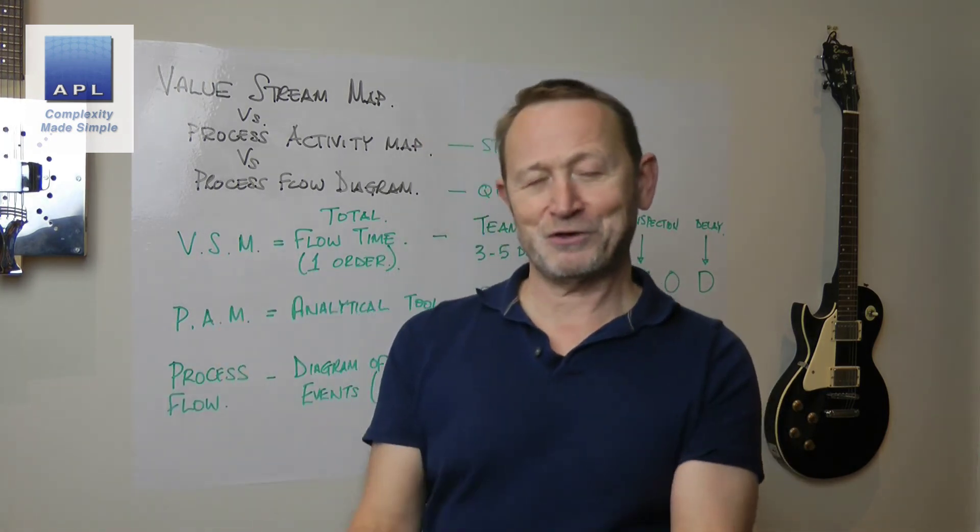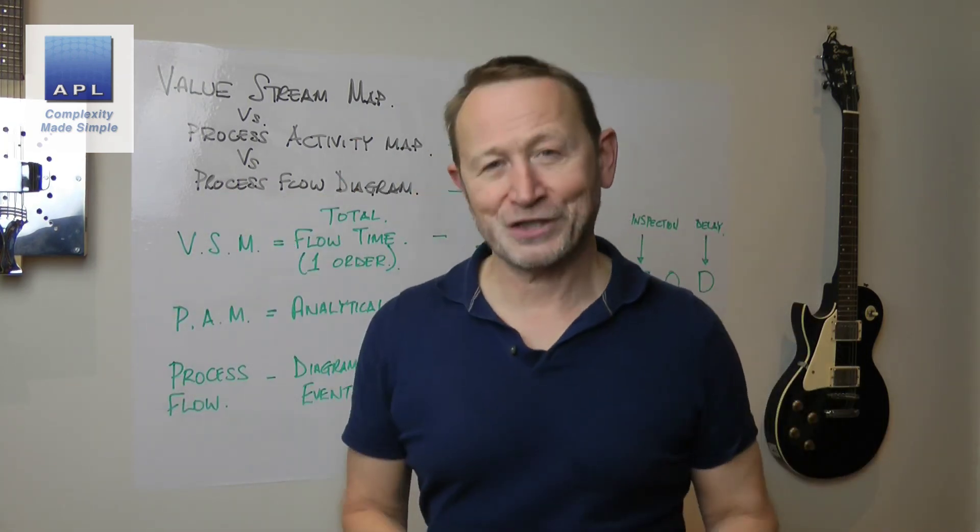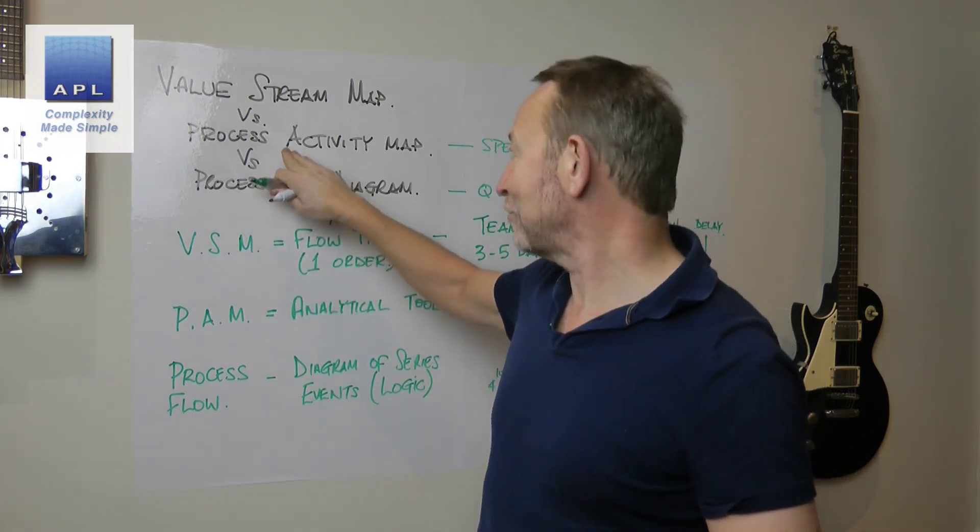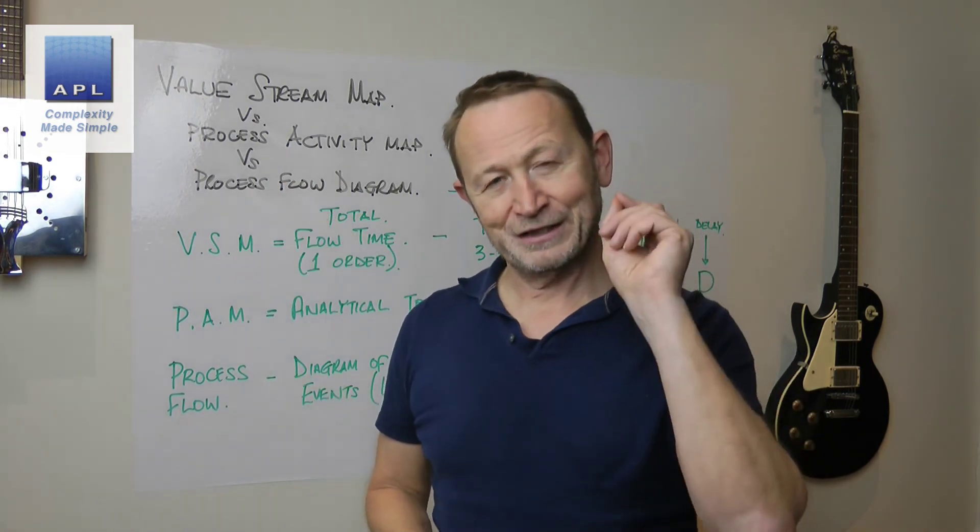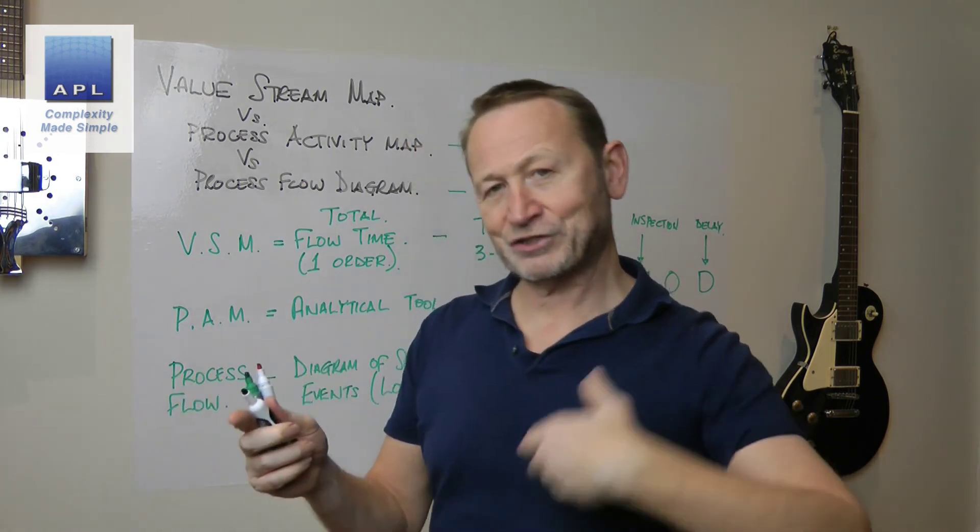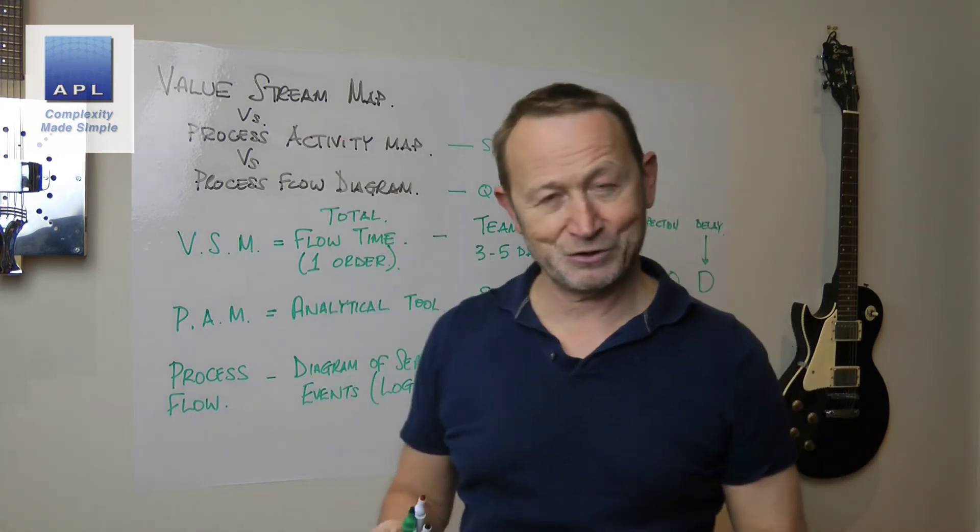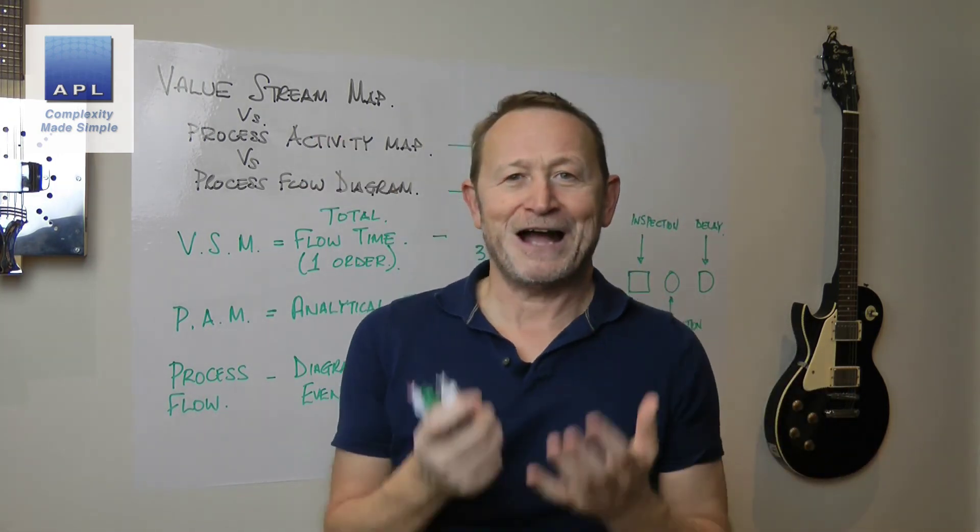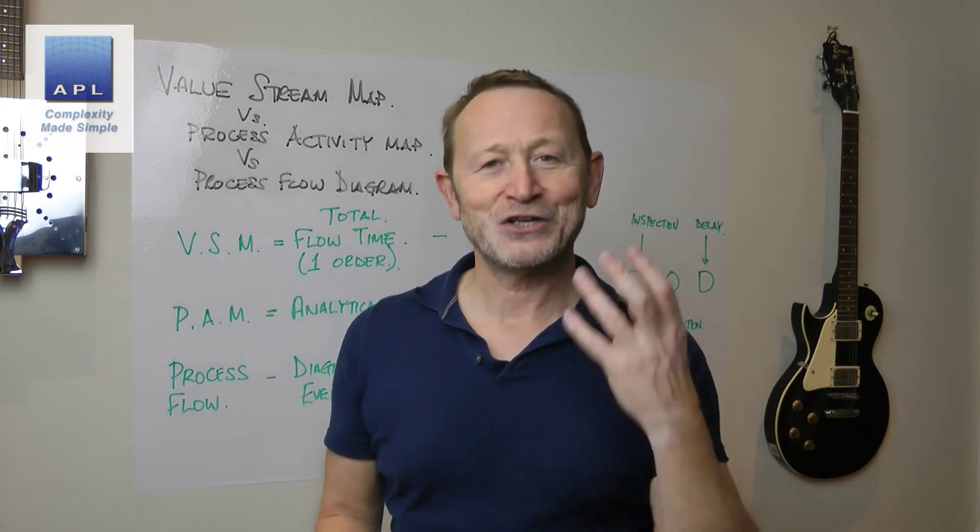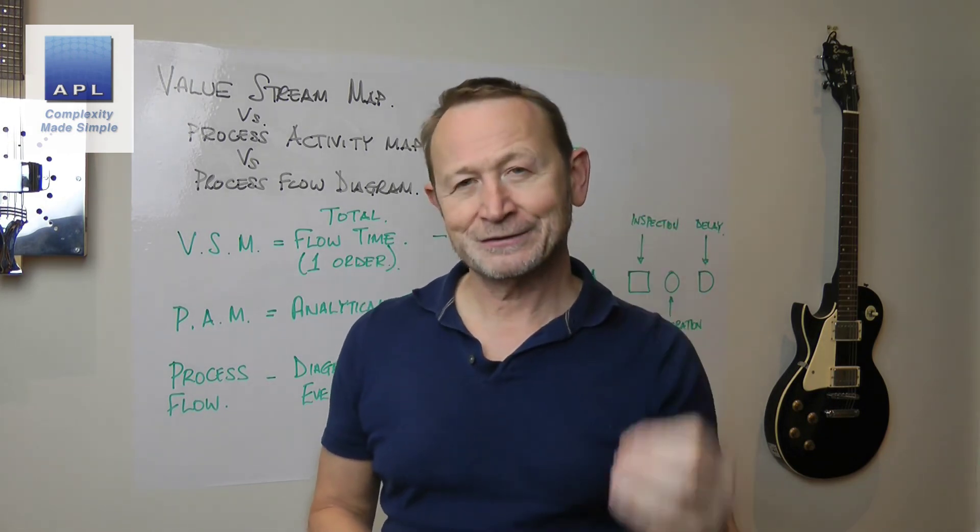For the person that asked me that question, hopefully that's answered your point: what is the difference between a value stream map and a process map—I think what he meant was a flow diagram—but I've added in process activity map. Use these tools, they are fantastic diagnostic techniques. You can make your process flow much quicker because you're measuring the flow time and deciding on how to improve it. You can please your customers, and the more you please your customers, the more money you will make. Use the diagrams with a load of other diagnostic tools and improvement tools to make more money.